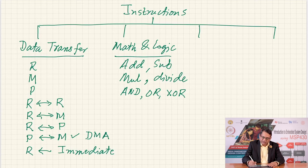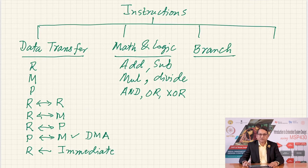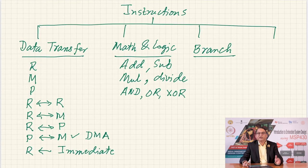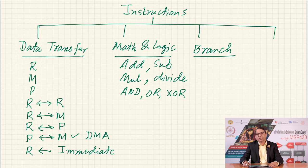The third type of instructions are called branch instructions. Branch instructions are those which change the sequence of instructions being executed. Normally, the microprocessor fetches the contents of a memory location, executes it, then goes to the next sequential location. But once in a while you may want to jump to an arbitrary location — for example, where you have stored a subroutine. Instructions that alter control from the current location to a different, non-sequential location are called branch instructions.